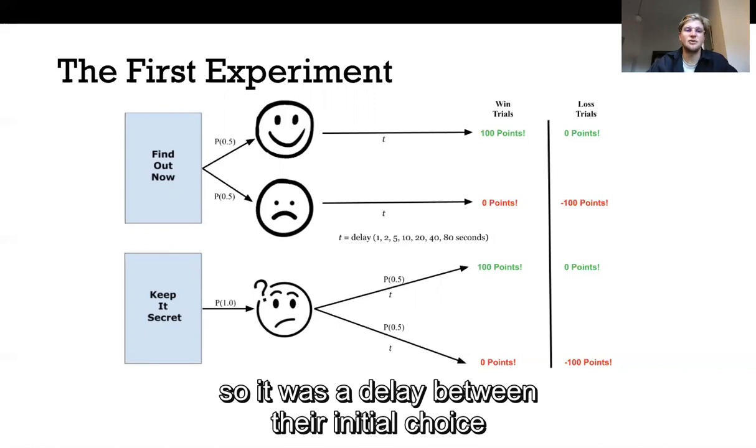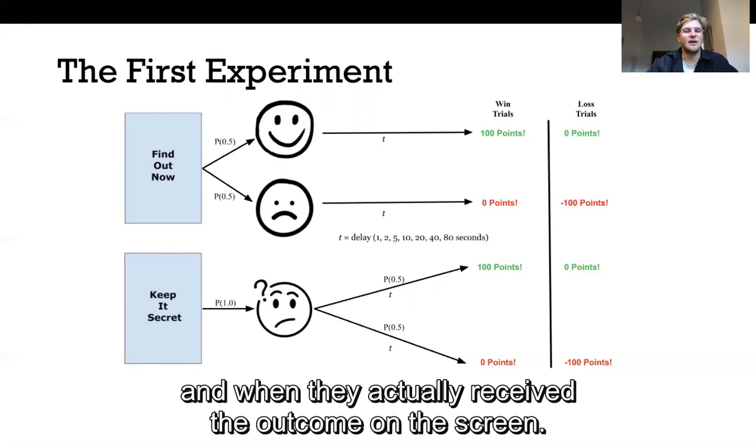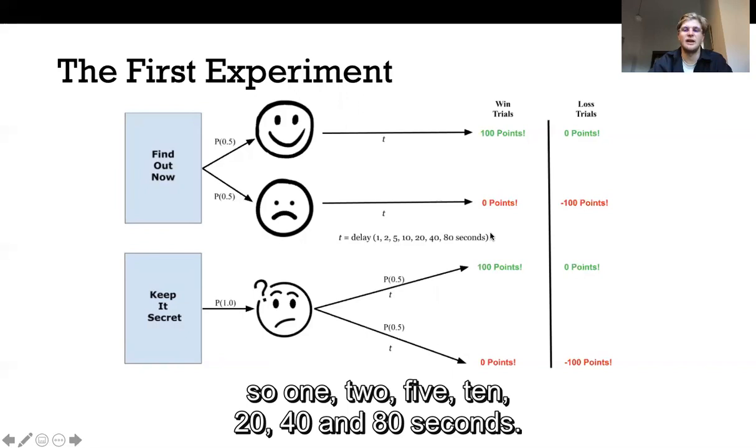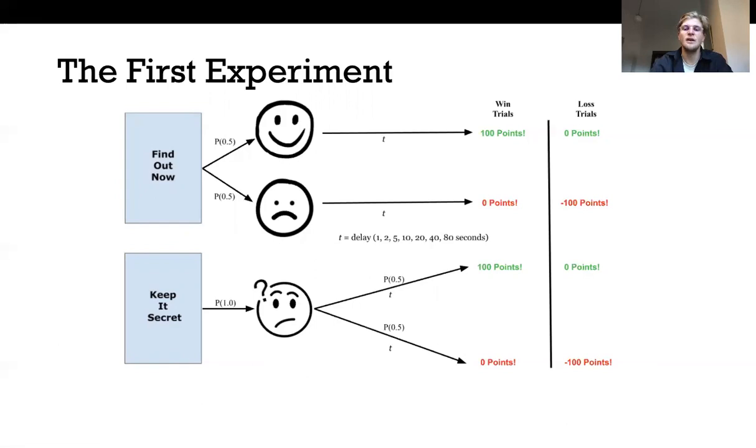The other variable at play is the delay length. So it was a delay between their initial choice between finding out now and keeping it secret and when they actually received the outcome on the screen. These delays range from one second up to 80 seconds and you can see in the diagram here these delay lengths. So one, two, five, ten, twenty, forty and eighty seconds and participants experienced ten of each of these.